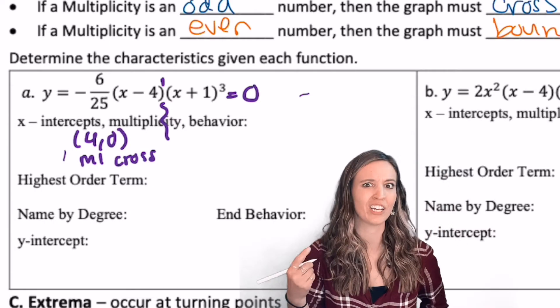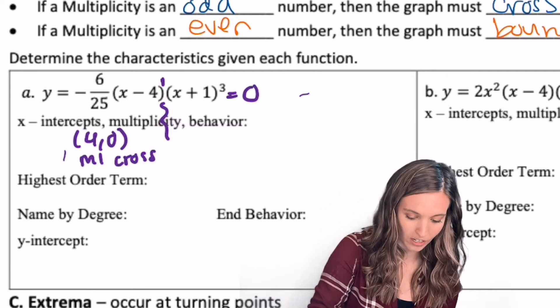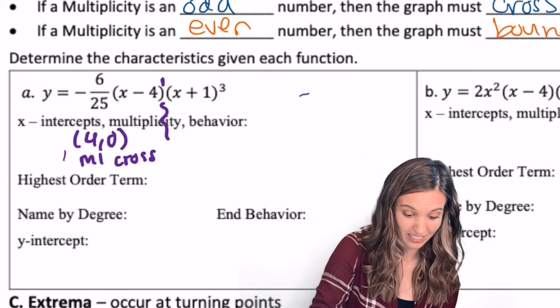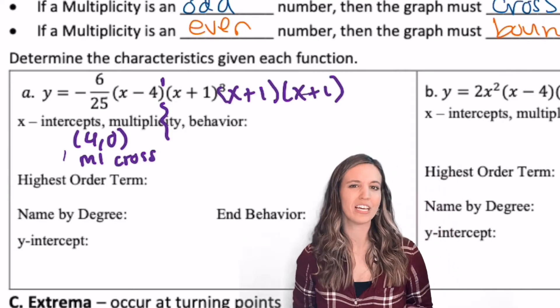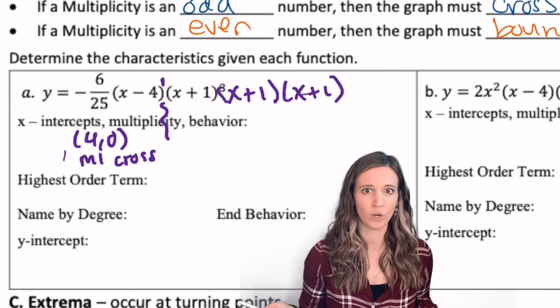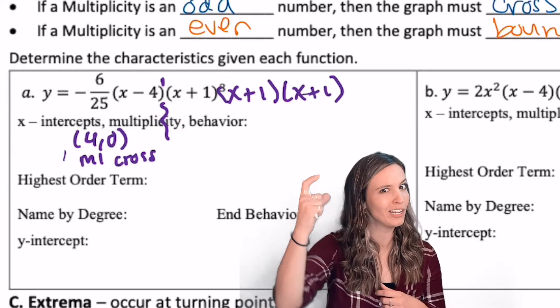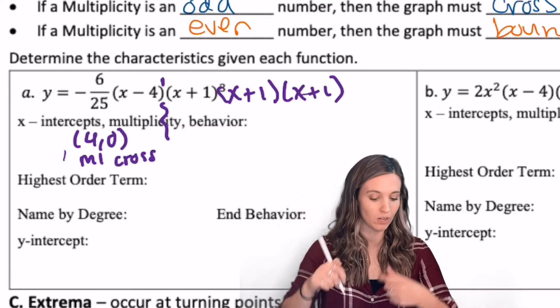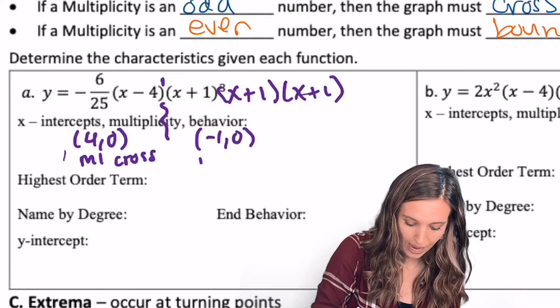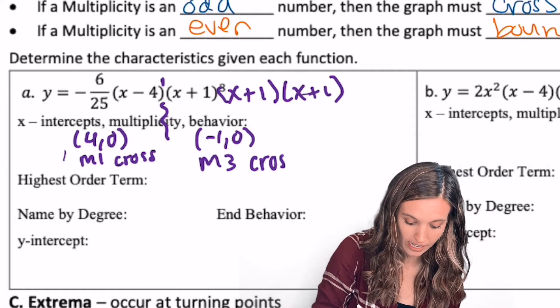X plus 1 cubed. That really means that x plus 1 happens three times. So I'm going to have this zero x equals negative 1, so an x-intercept of negative 1, 0, but it's going to occur three times. So its multiplicity is 3. I can kind of use the exponent to tell me what the multiplicity was. So negative 1, 0 has a multiplicity of 3, also odd, so I can say it crosses there as well.